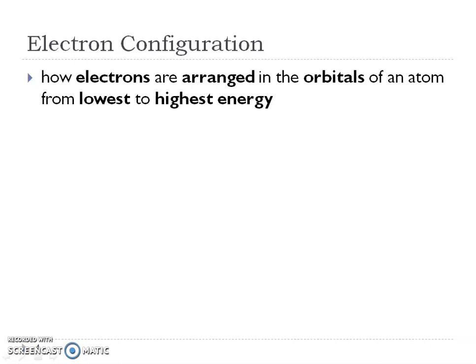Pause the video, fill in the blanks, read as you write, and then play to hear my words. The electron configuration is how electrons are arranged in the orbitals of an atom, and we want to remember that those electrons are going to be arranged from lowest to highest energy. The first electrons go in the lowest energy and then they move up.